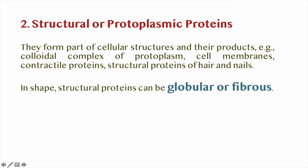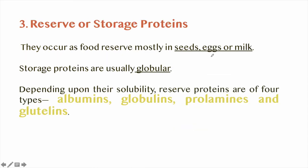Structural or protoplasmic proteins form part of cellular structures and their products — for example, the colloidal complex of protoplasm, cell membranes, and contractile proteins. Structural proteins can be globular or fibrous. Reserve or storage proteins occur as a food reserve mostly in seeds, eggs, or milk and are usually globular in shape. Depending upon their solubility, reserve proteins are of four types: albumin, globulin, prolamins, and glutelins.